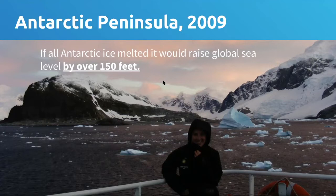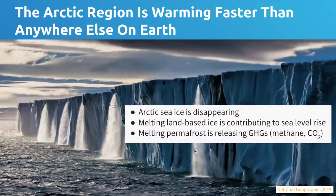If you melted all of the Antarctic ice sheet, we know that would raise global sea levels significantly — about 60 meters or over 150 feet — which would hugely change the face of the planet and completely ruin this beautiful ecosystem. Both poles are warming faster than anywhere else on Earth.